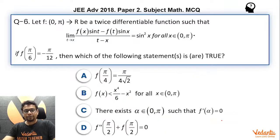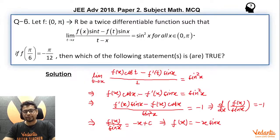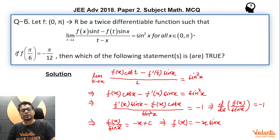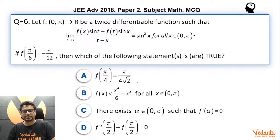Options A and D are quick to check. For option A: f(π/4) = −(π/4)·sin(π/4) = −π/(4√2). However, option A states π/(4√2), which has the wrong sign. So option A is not true and not part of the answer.